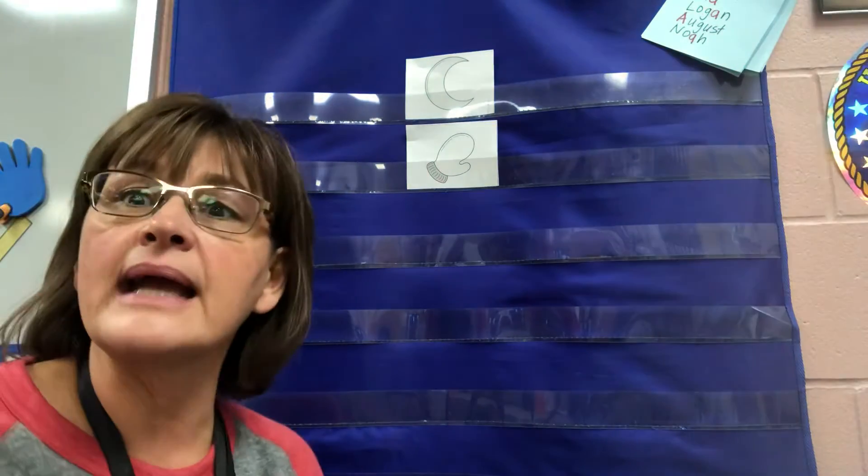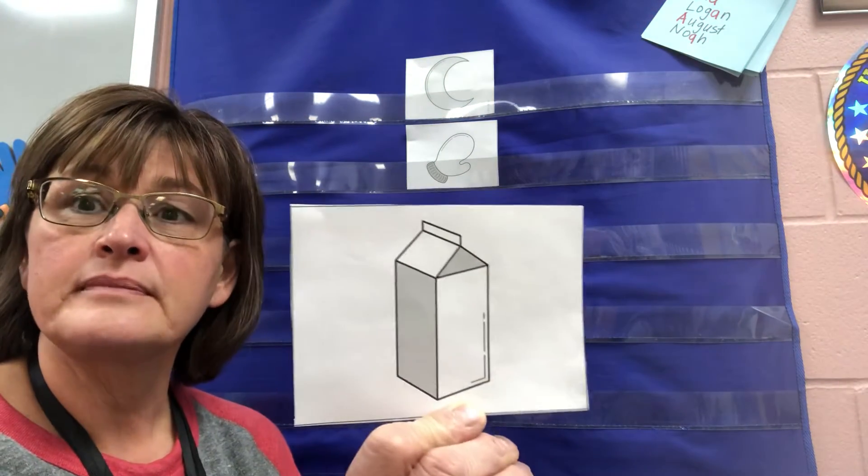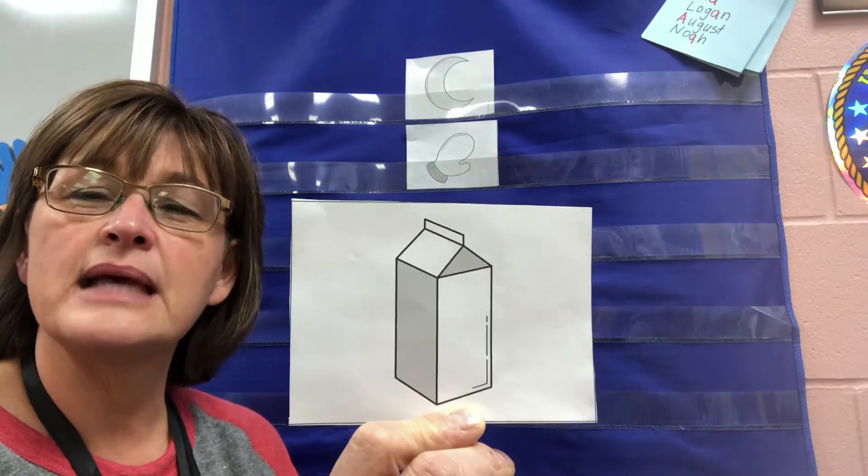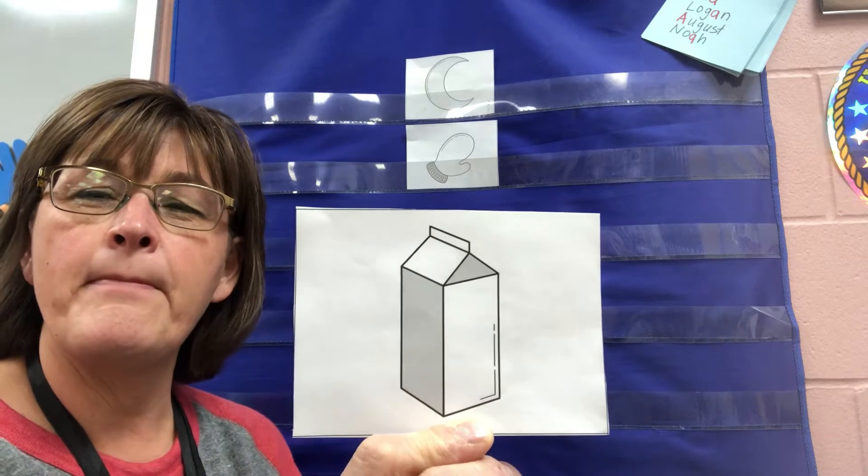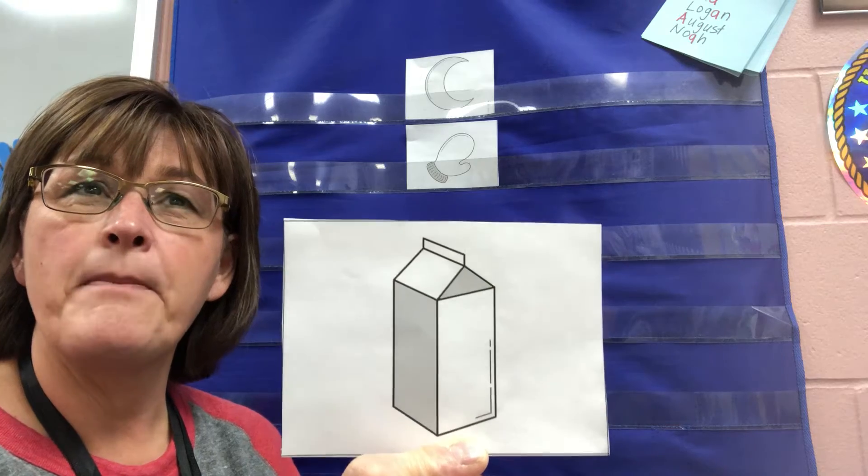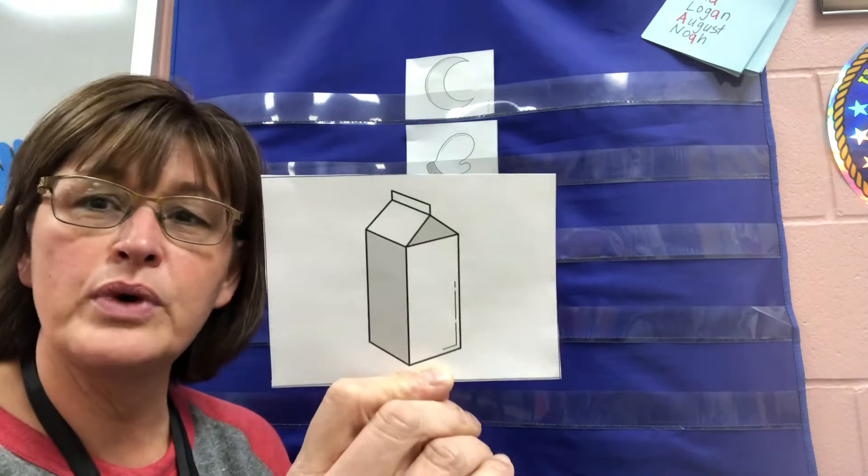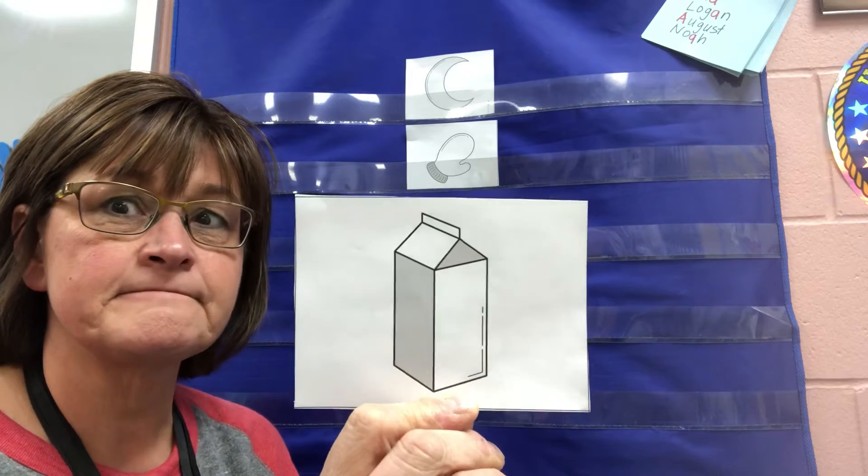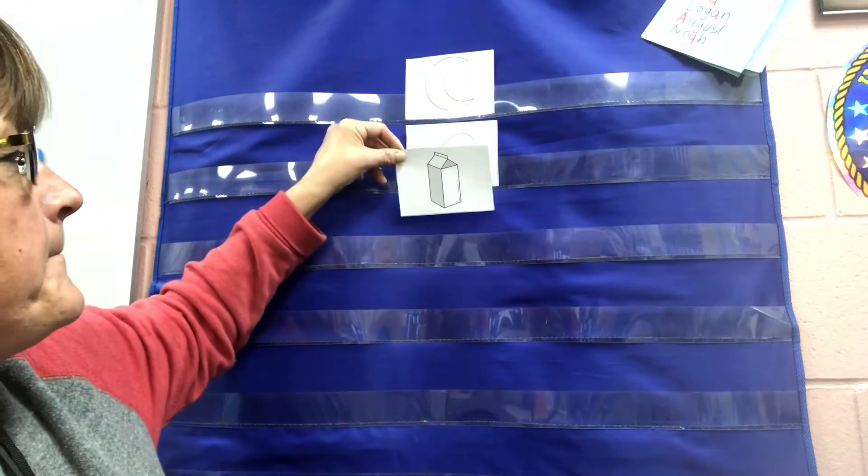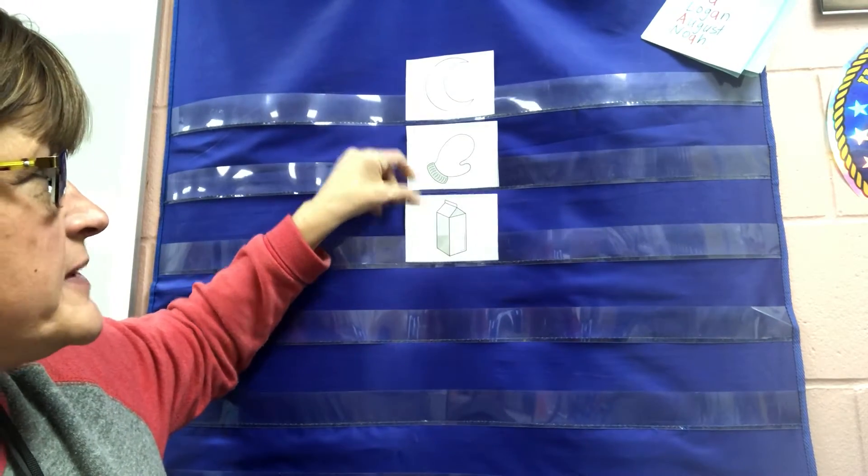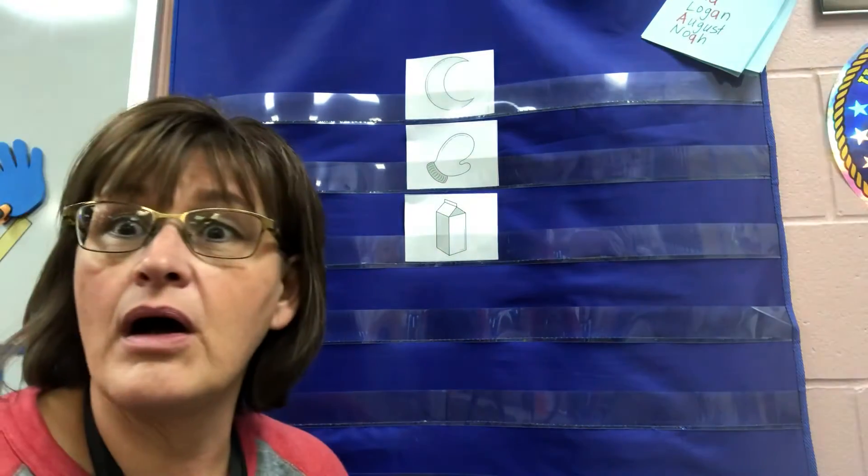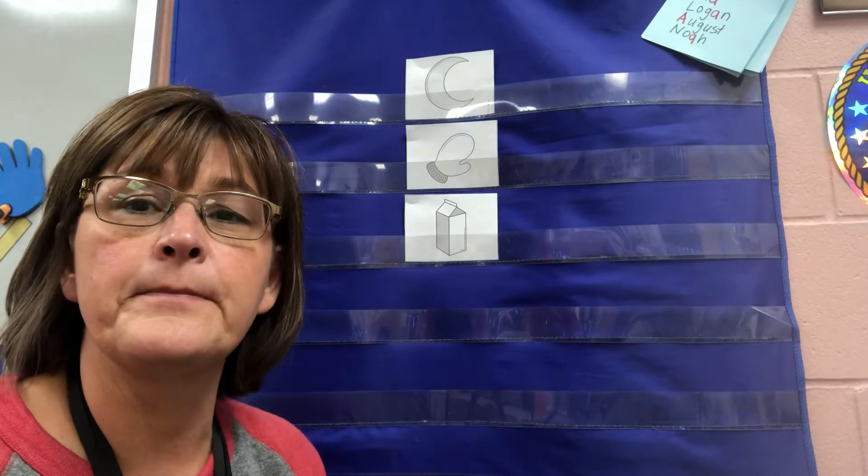All right let's take a peek at our next card. Think about it in your brain. Say it out loud. This is milk. Milk. Do you think milk should go with moon and mitten? I hear the same. I hear the same m sound at the beginning. So I am going to add that to my chart. Moon. Mitten. Milk. All of them begin with that mmm sound.